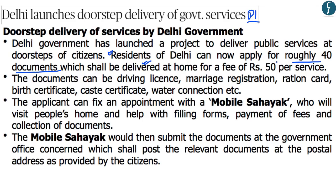For these services, residents are charged Rs. 50. The 40 documents available include driving licenses, marriage certificates, ration cards, birth certificates, caste certificates, and water connections, among others. A resident applies by fixing an appointment with a mobile Sahayak, who visits the applicant's home to help with form-filling, fee payment, and document collection, then submits the documents to the concerned government office.